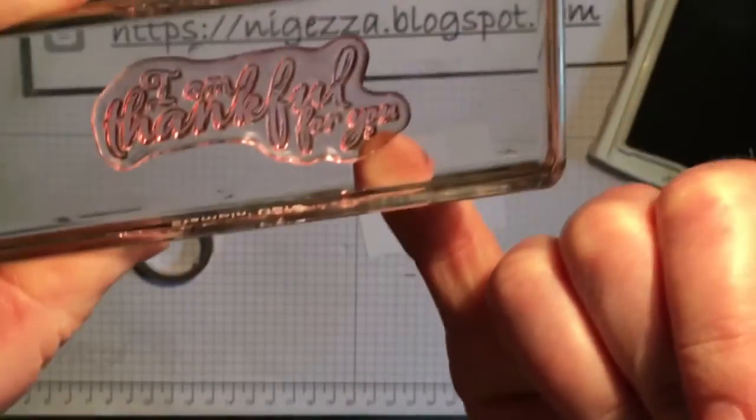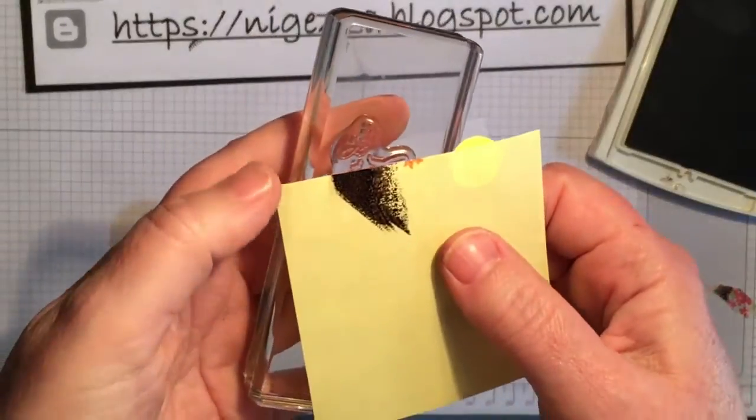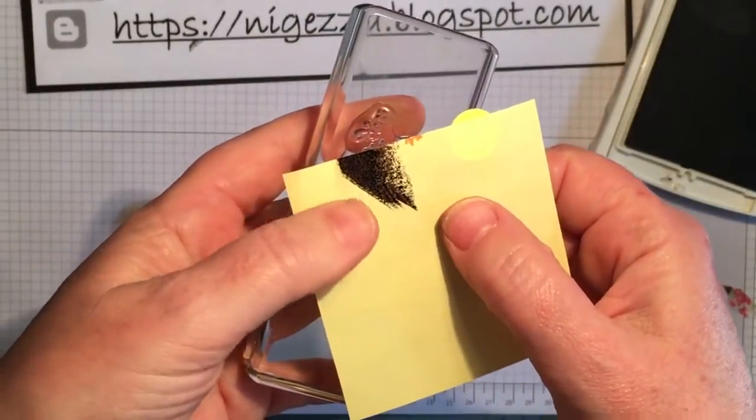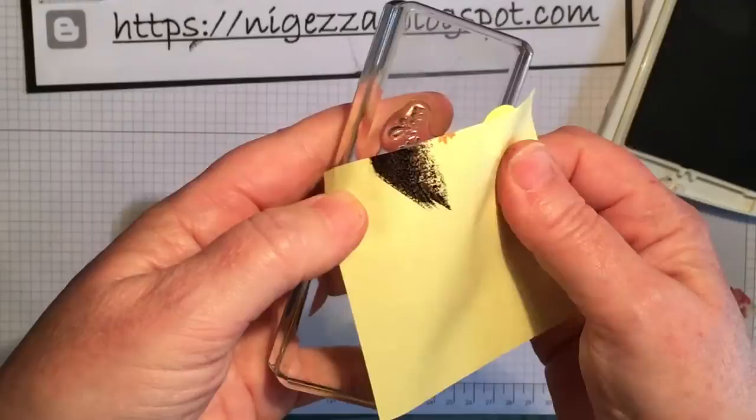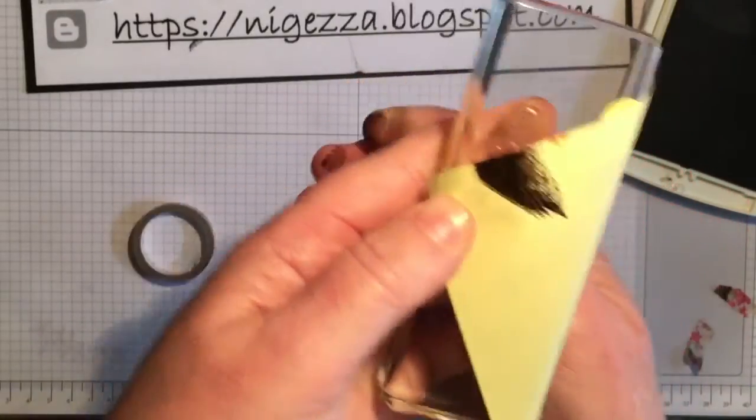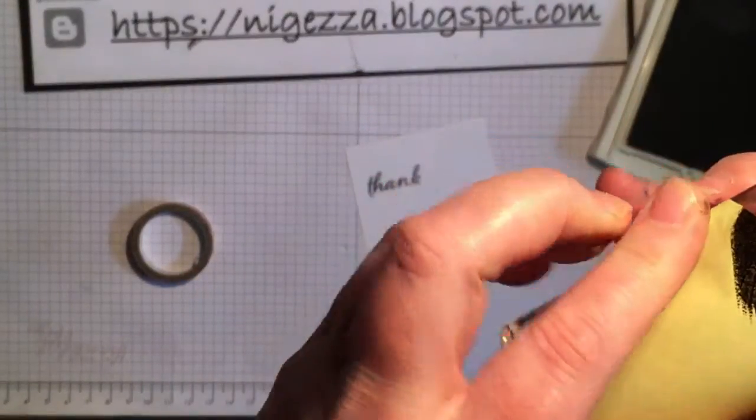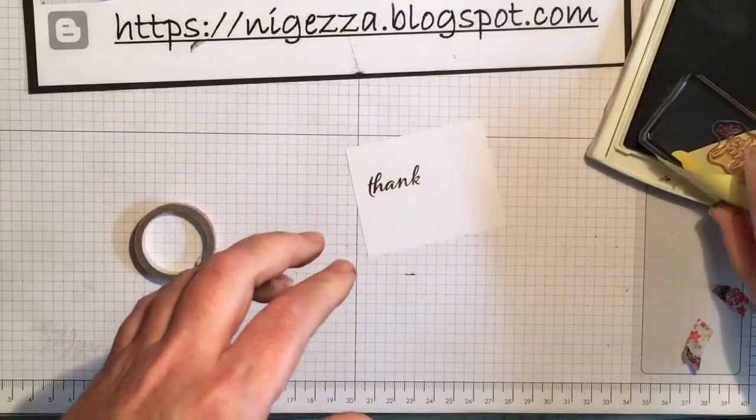So now we just want the teeny tiny 'u' at the end. So take our post-it, we should be able to get rid of everything by the u with the post-it. Ink it up.